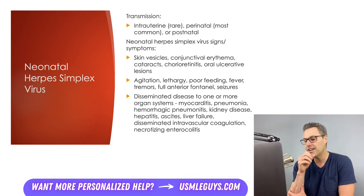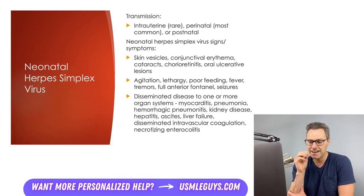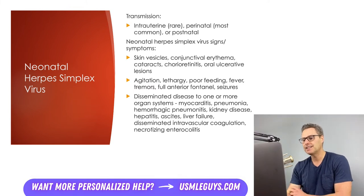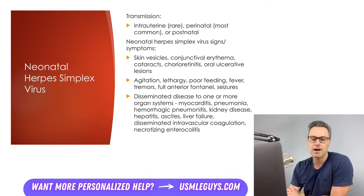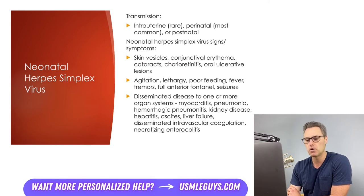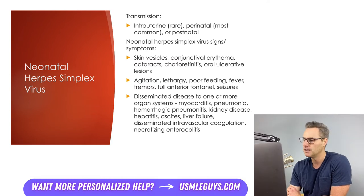Finally, neonatal HSV can cause disseminated disease and end organ damage, infecting nearly any organ system. The heart can be infected causing myocarditis, the lungs causing pneumonia or hemorrhagic pneumonitis, kidney disease, hepatitis — really anything.